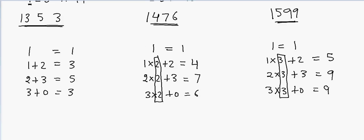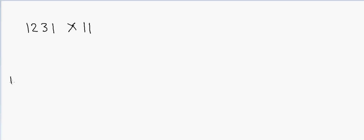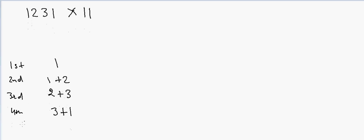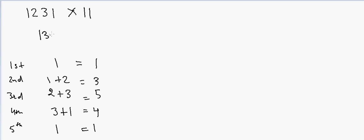Let's do another example with a four-digit number. I have 1, 2, 3, 1 and I want to multiply by 11. The first digit is 1, the second is 1 plus 2, the third is 2 plus 3, the fourth is 3 plus 1, and the fifth is 1. So the answer is 1, 3, 5, 4, 1.